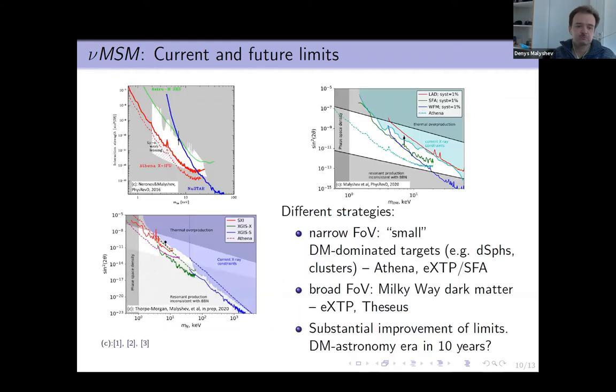What can next generation missions do? We propose that different strategies can be used. For narrow field of view missions, we propose observations of some kind of small dark matter dominated targets, which can be, for example, dwarf spheroidals or cluster of galaxies. Again, to make size of this object match the size of the field of view of these missions. Such missions are ATHENA and SFA instrument from eXTP.